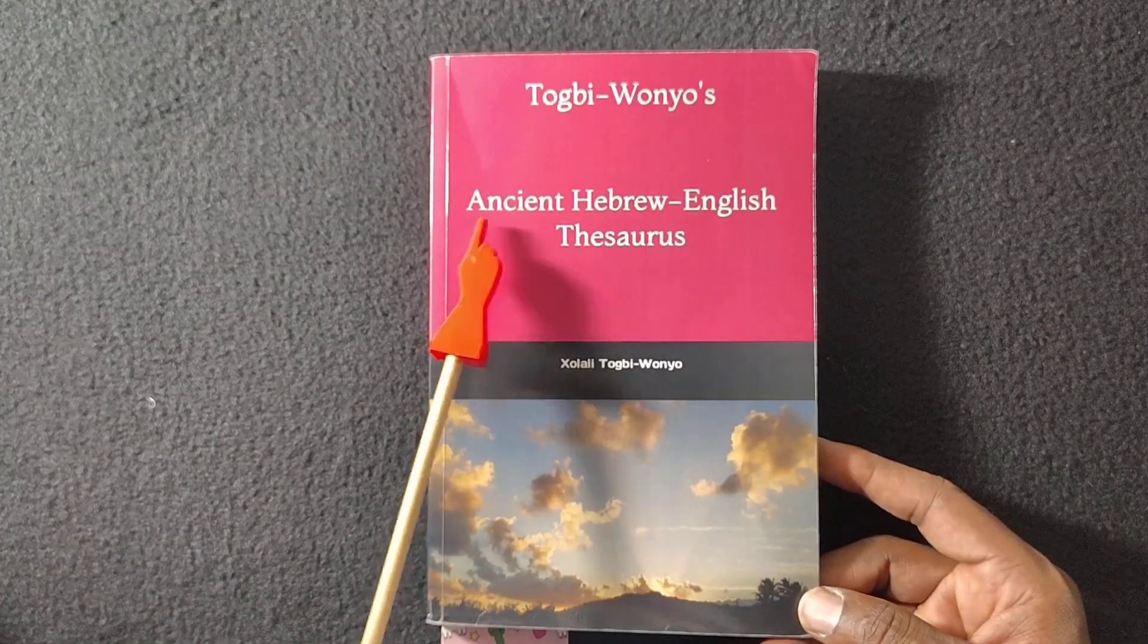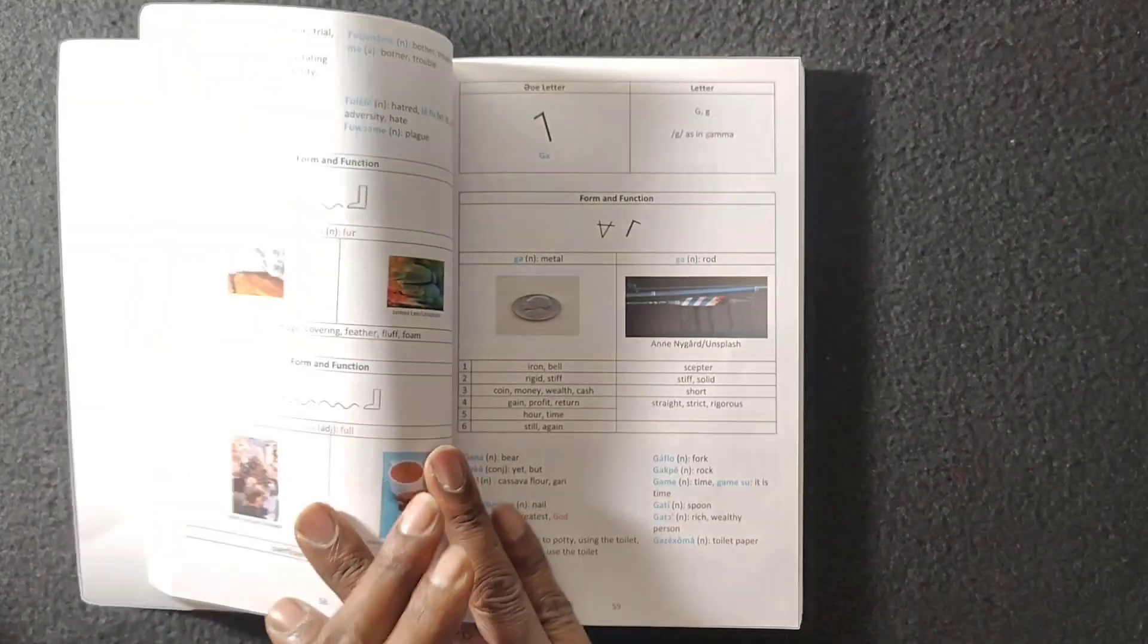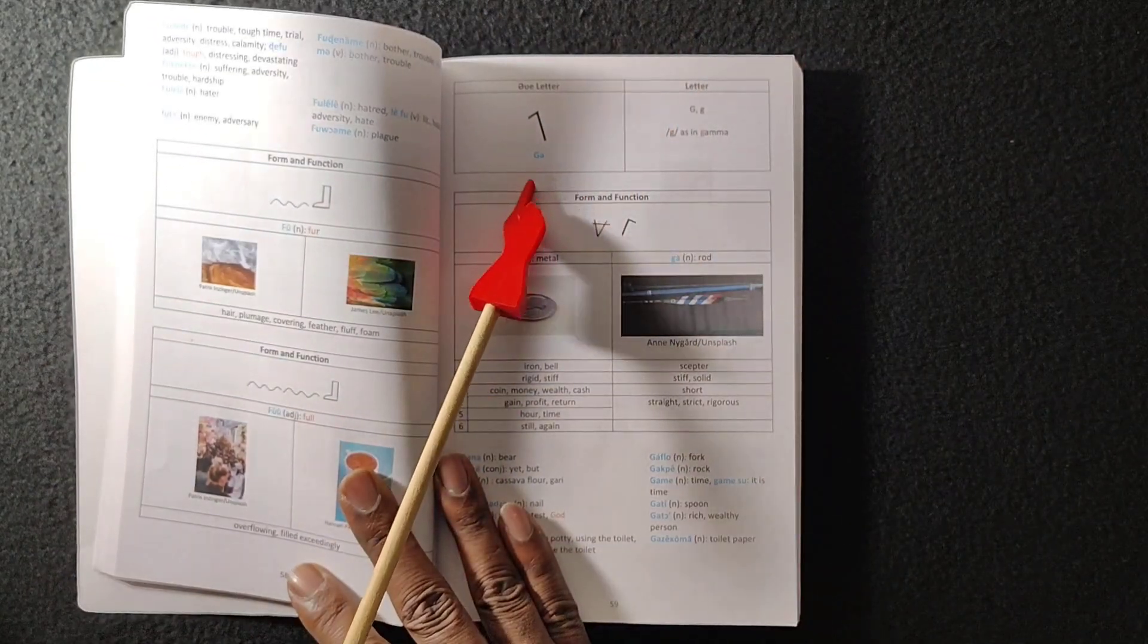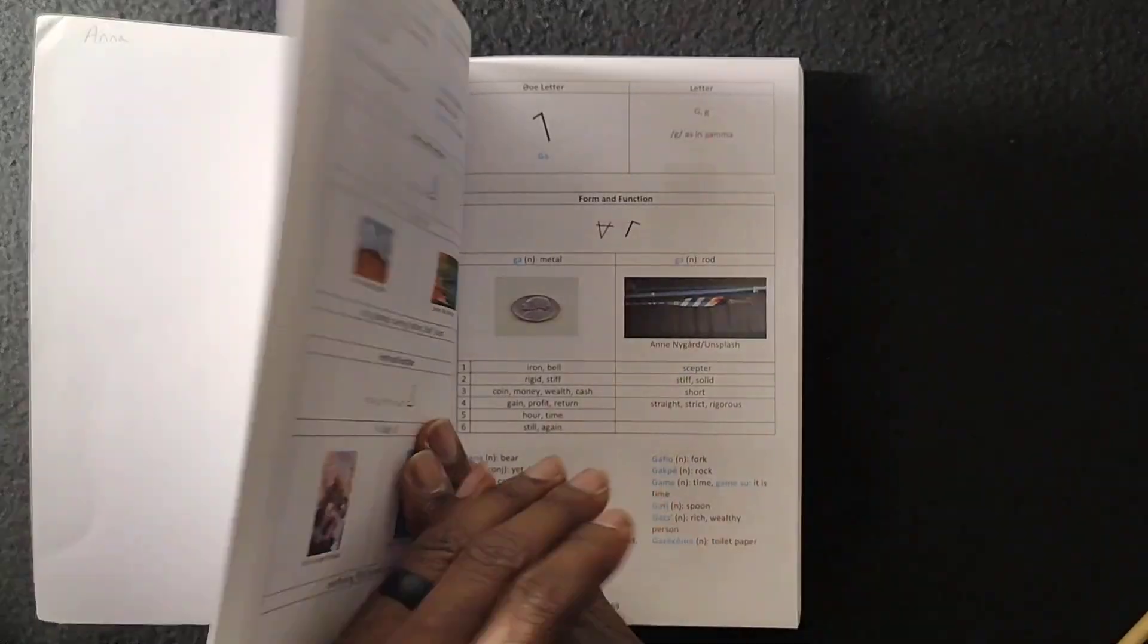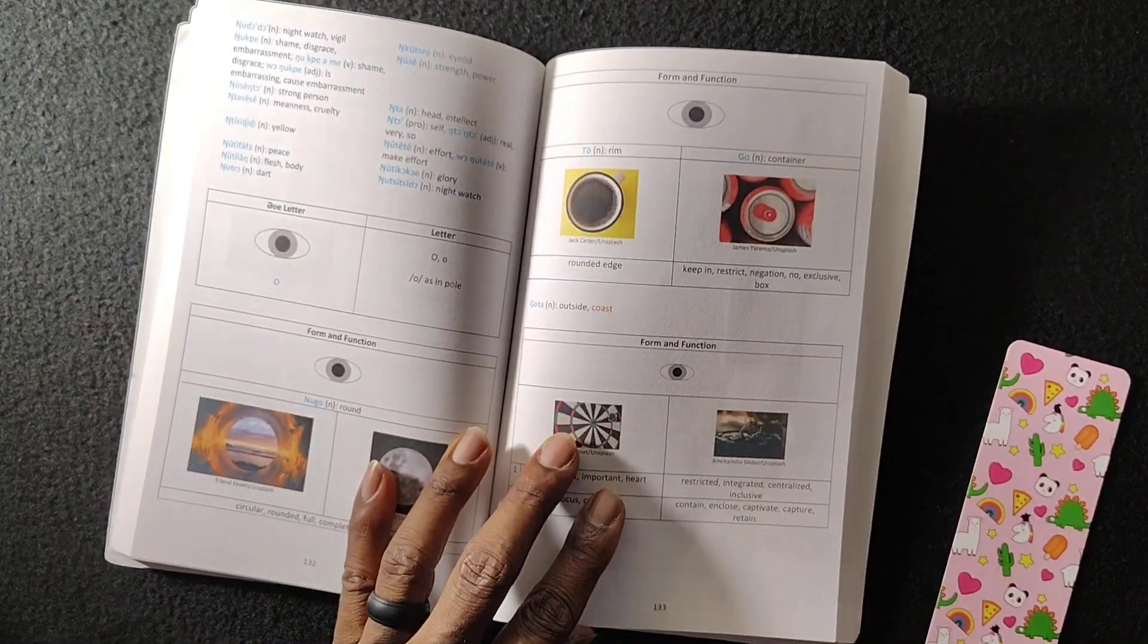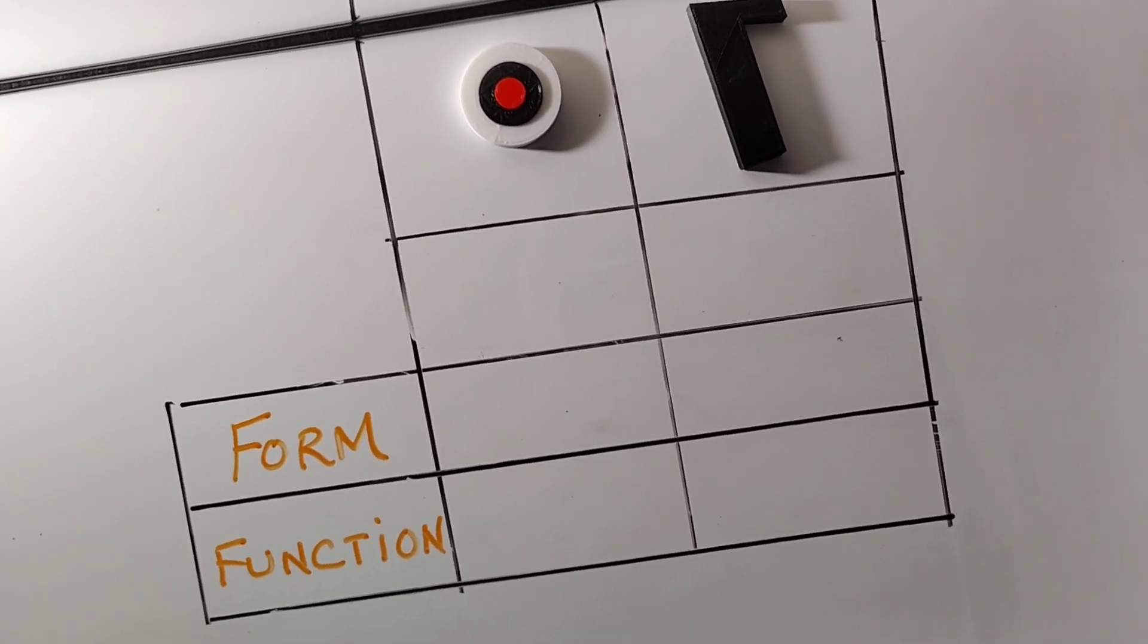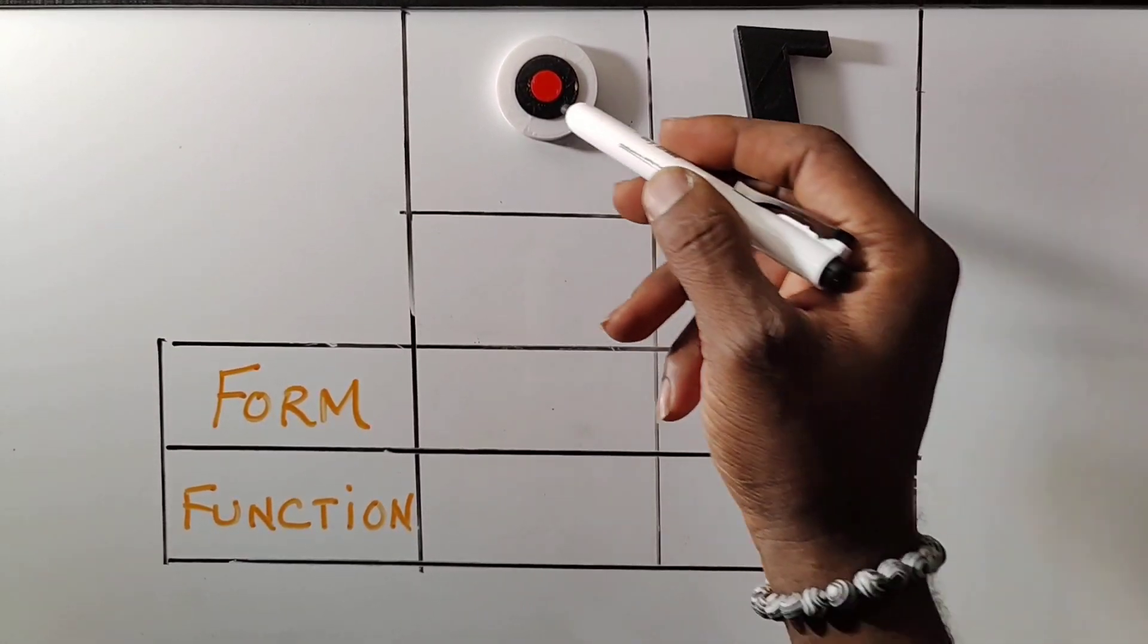Second, go to the ancient Hebrew-English thesaurus and find letters G and then letter O. From there, we get G-O.